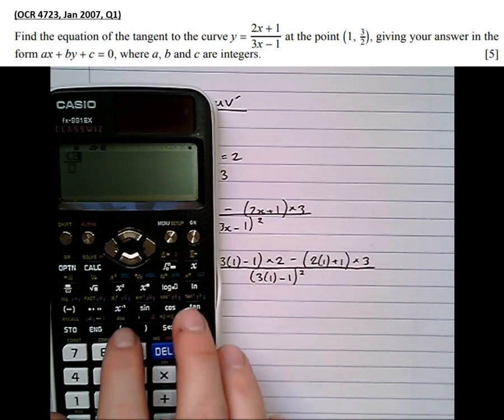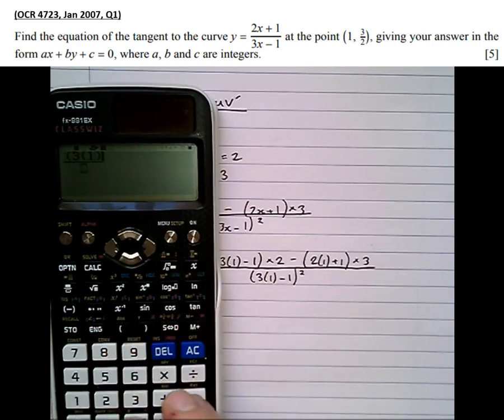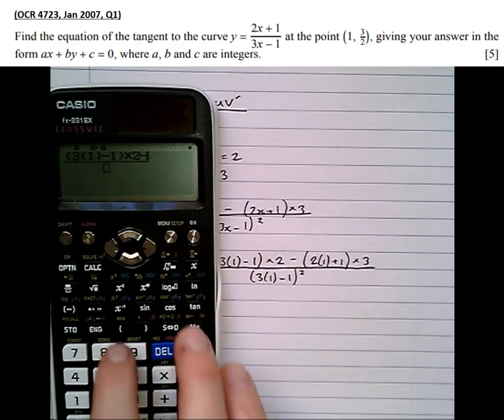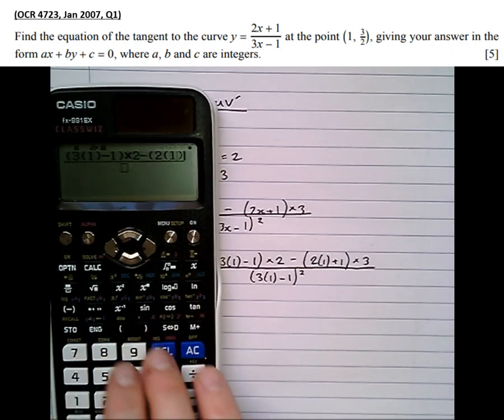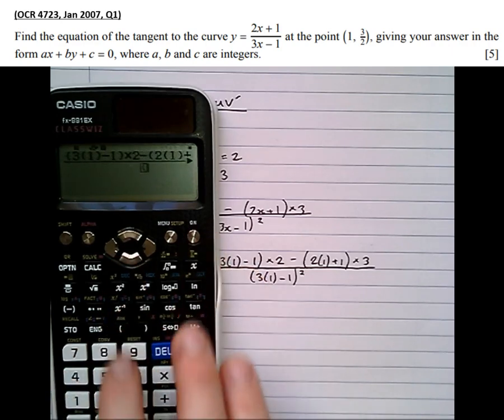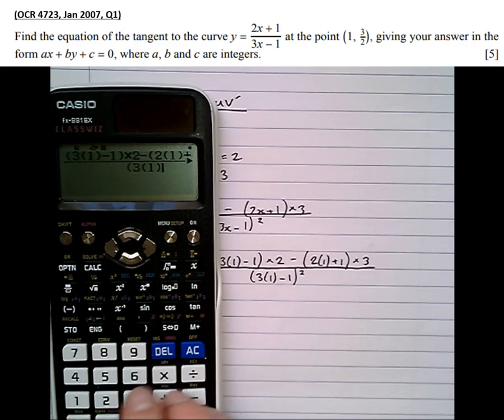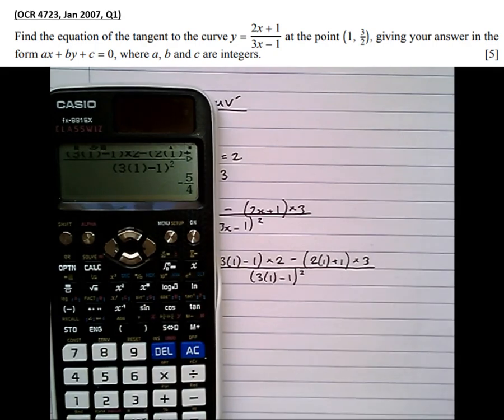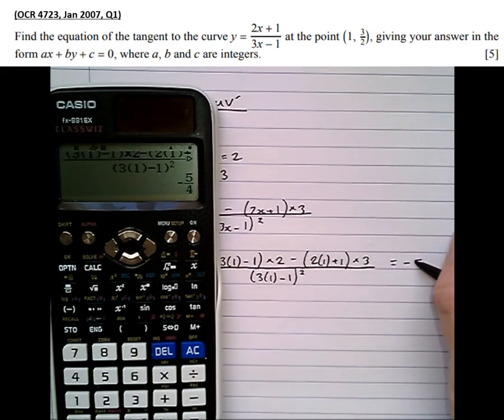3 lots of 1 minus 1 times 2, minus 2 lots of 1 plus 1 times 3, all over 3 lots of 1 minus 1 squared. So we've got minus 5 over 4, so that equals minus 5 quarters.